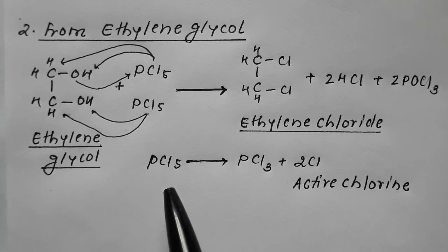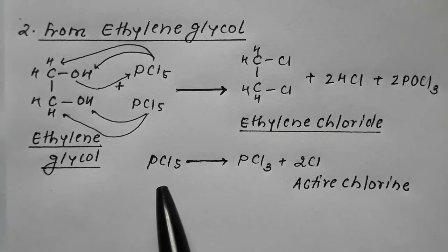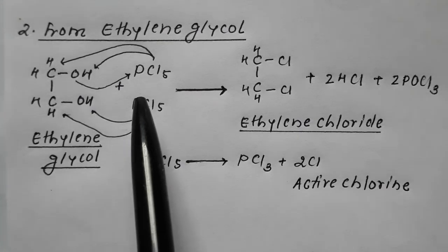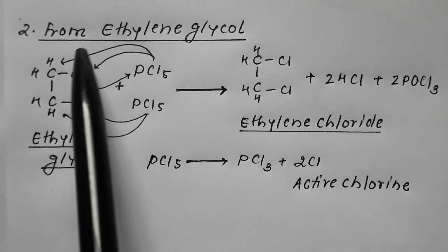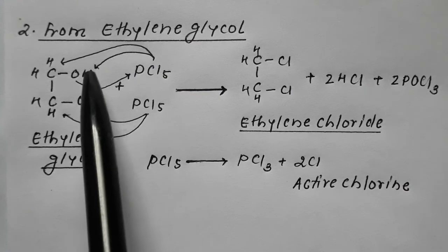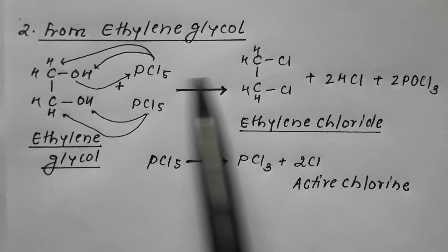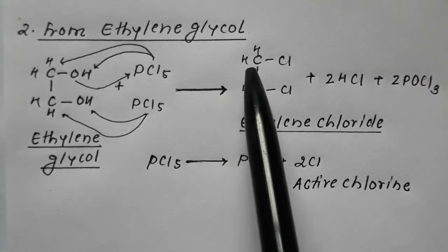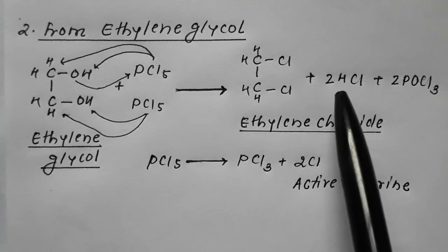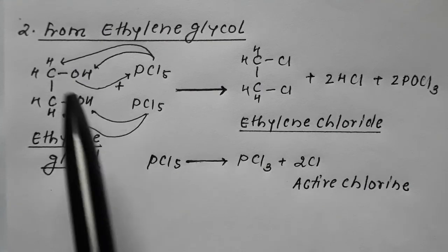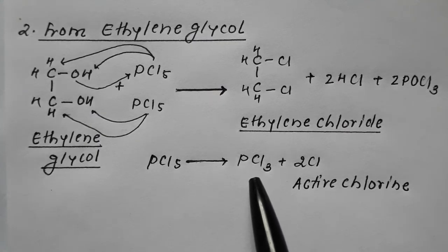When ethylene glycol is made to react with PCl₅, PCl₅ decomposes into PCl₃ and two active chlorine atoms. One active chlorine attaches to the carbon, one combines with the hydrogen to form HCl, and the oxygen combines with the leftover PCl₃ to form POCl₃.